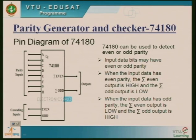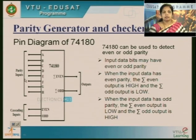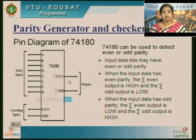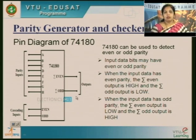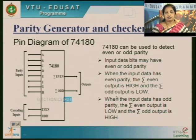This IC accepts 8-bit parity inputs and shows whether the inputs are even or odd. Based on the input data, the even parity output is 1 if there is even parity, and the even output is 1; otherwise the odd output is low.